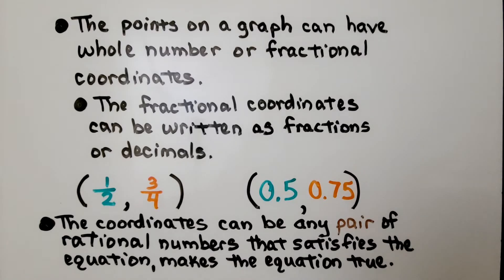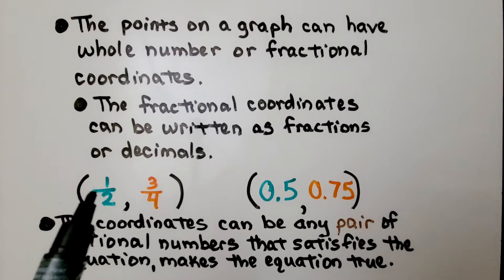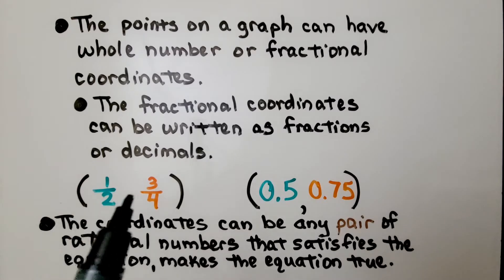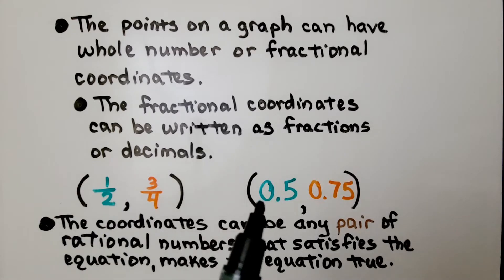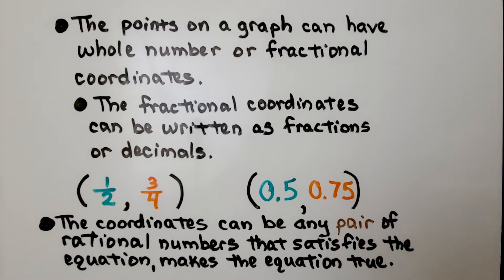The points on a graph can have whole number or fractional coordinates. The fractional coordinates can be written as fractions or decimals. We might see something like x is one half and y is three fourths, or we could see it as 5 tenths or 75 hundredths. The coordinates can be any pair of rational numbers that satisfies the equation — that makes the equation true.